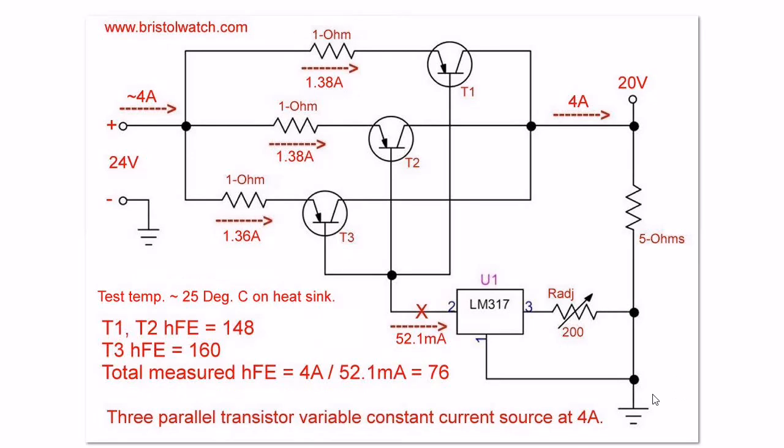Now we are drawing 4 amps through the same circuit. And the distribution of current through these individual 1 ohm resistors, thus individual transistors, is nearly perfectly balanced. 1.38 amps, 1.38 amps and 1.36 amps, if you include measurement mistakes and so forth. And so our combined current now of 4 amps, I measured off a base current sent through the LM317 sync circuit of 52.1 milliamps. 4 amps divided by 52.1 milliamps gives me a collective HFE of 76. Boy, that's a big drop from 160 when we started out with 2 amps. Let's find out why and look at the spec sheets.